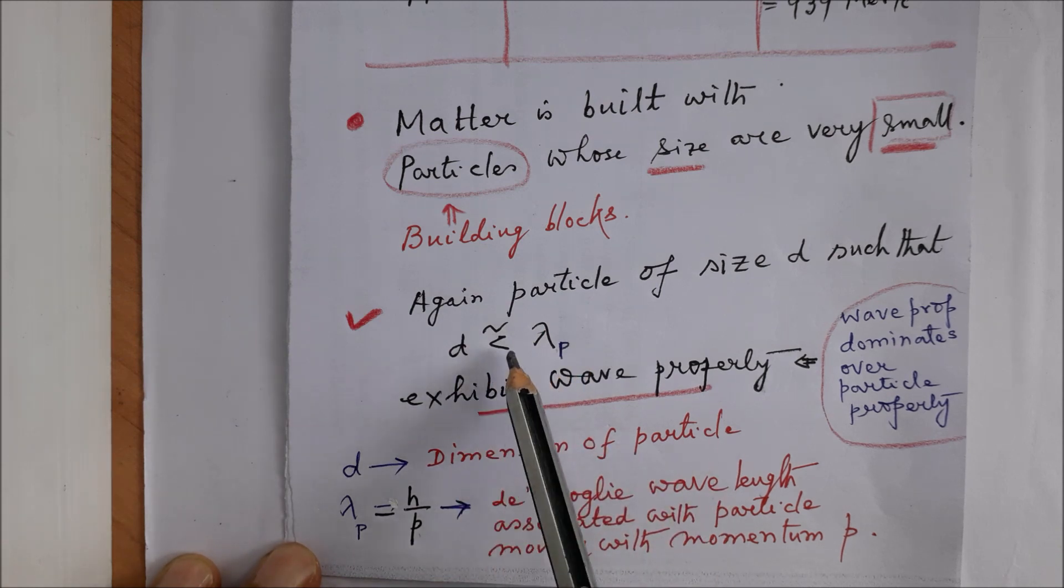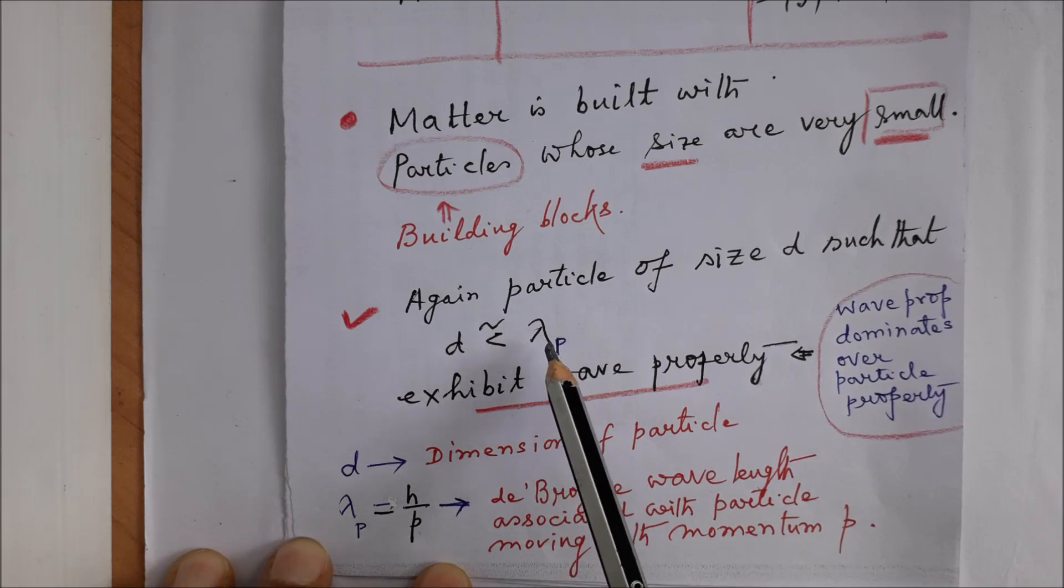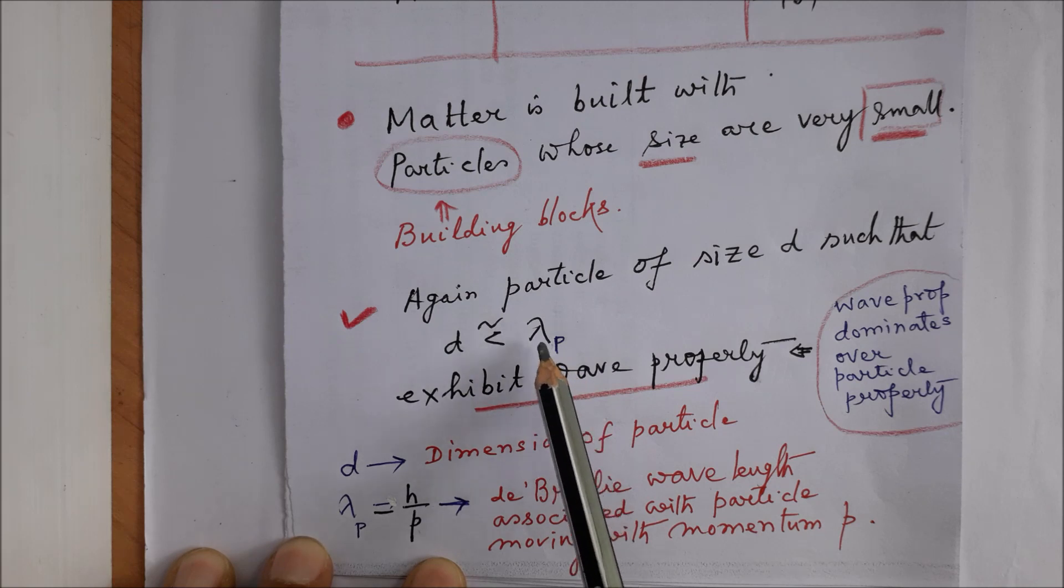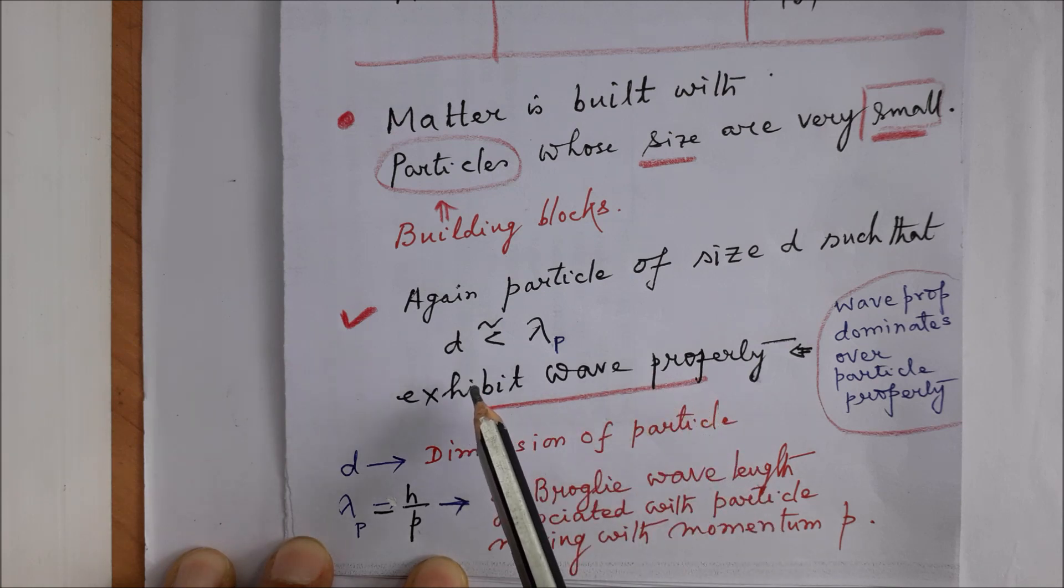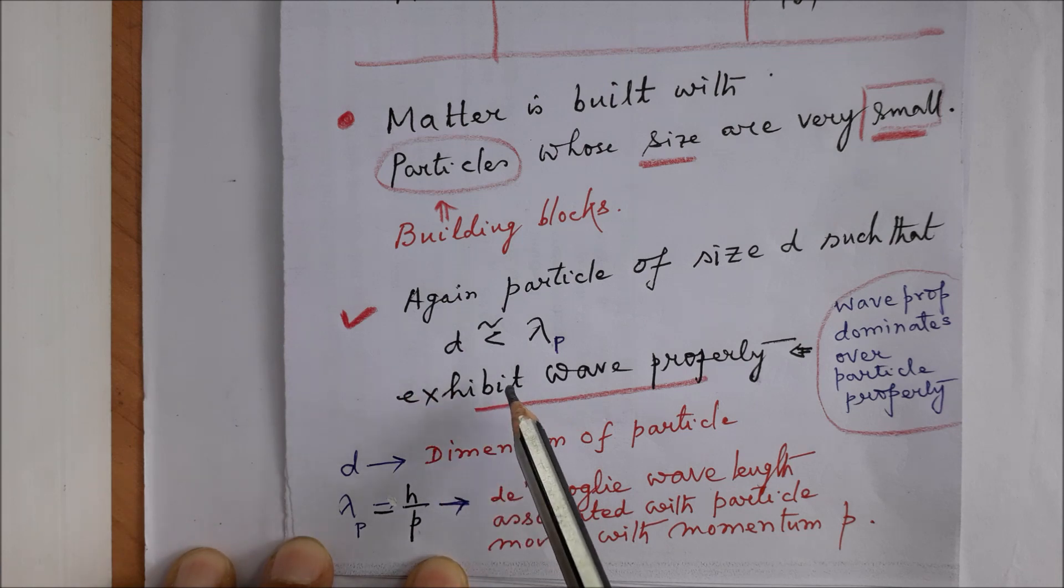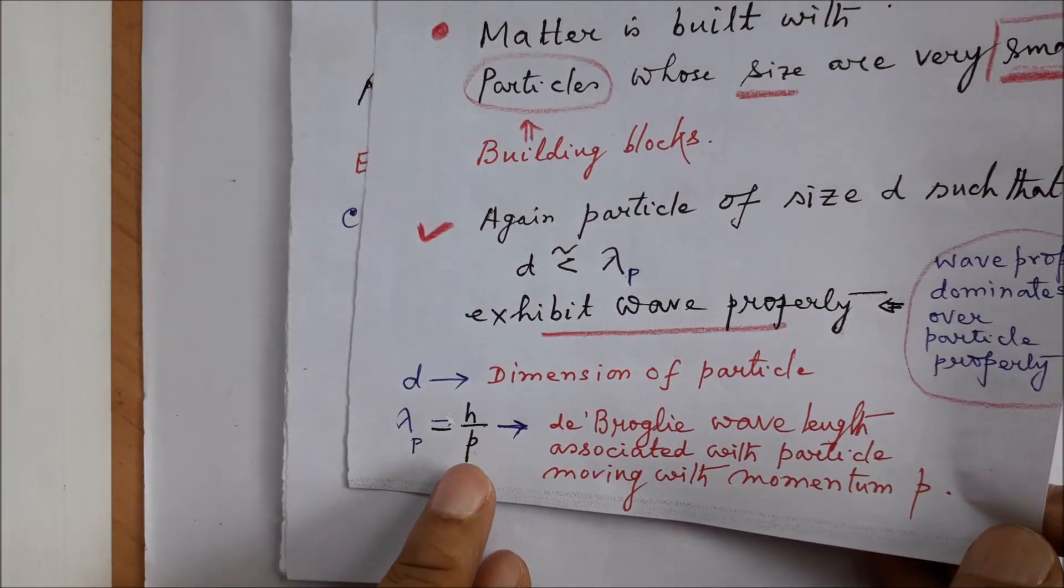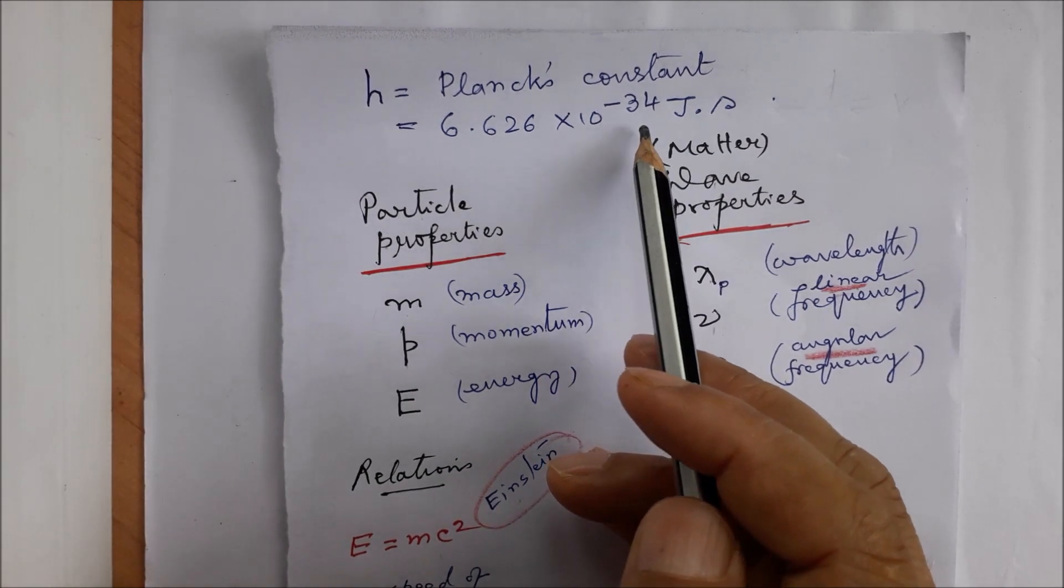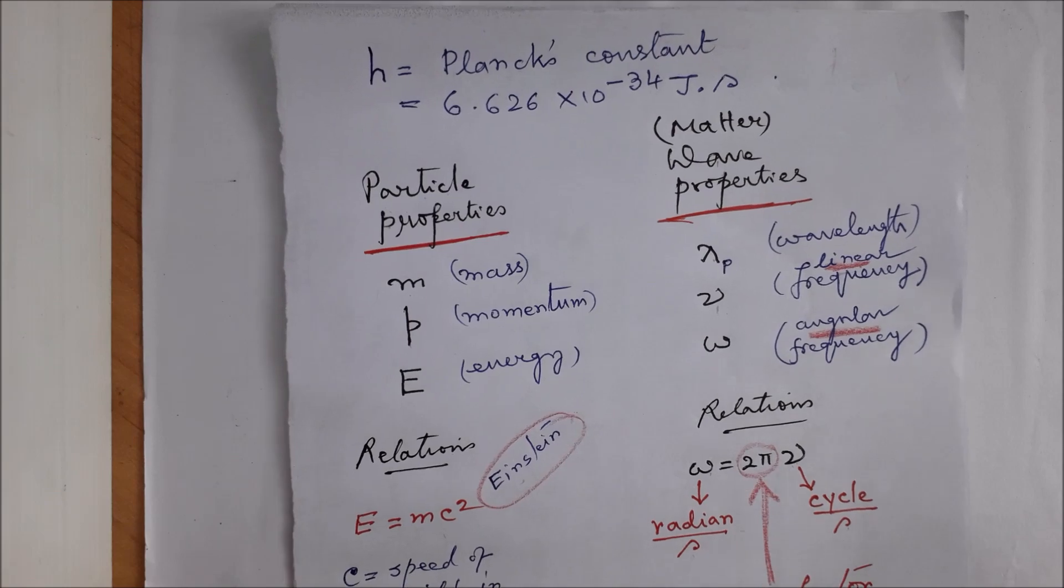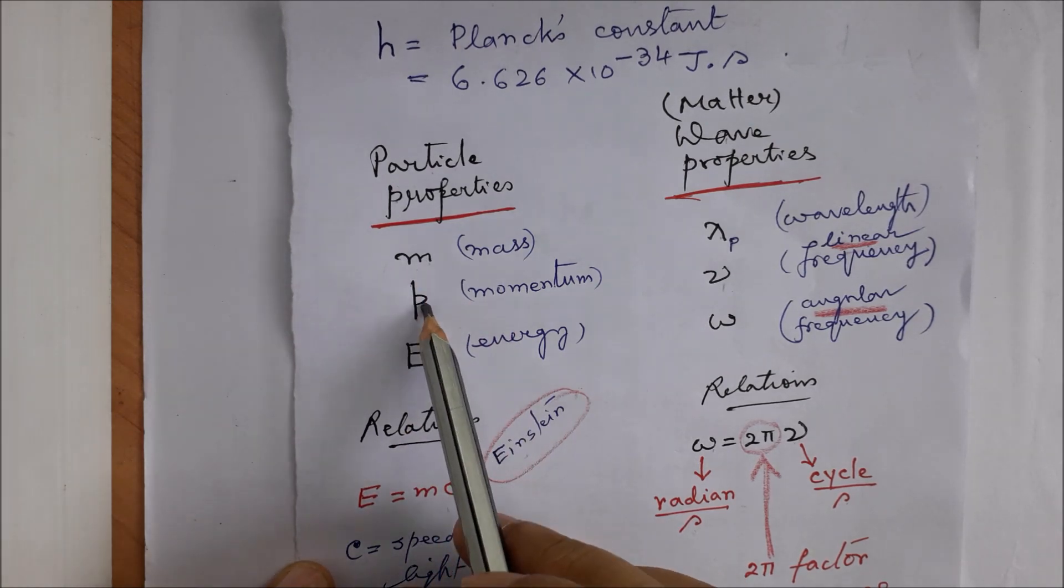Now we can compare the dimension of the particle with the associated de Broglie wavelength. If it so happens that d is of the order of or less than λ_p, then it is very evident that λ_p will manifest. So in such situation where λ_p cannot be ignored, where λ_p is greater than or of the order of dimension of the particle, size of the particle, then wave property will dominate. The particle property gets suppressed. So this is the idea of quantum mechanics, and it was initiated by de Broglie. Now h represents Planck's constant of value 6.626×10^-34 joule second.